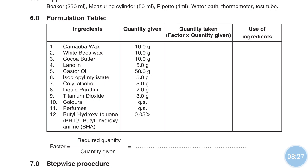Cetyl alcohol and liquid paraffin are emollients — emollient means having the quality of softening or soothing. Titanium dioxide is used as a lubricant, reducing friction. Colors are used as color intensifiers or coloring agents. Perfumes are used as perfuming and flavoring agents. BHT — butyl hydroxytoluene or butyl hydroxyanisole — is used as an antioxidant to prevent oxidation.